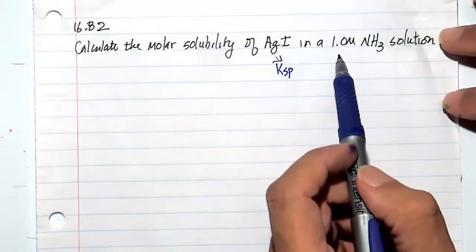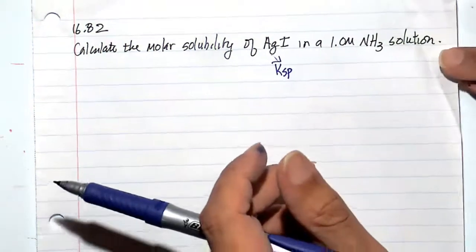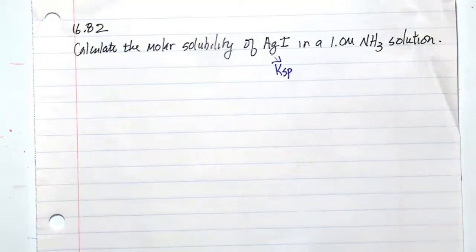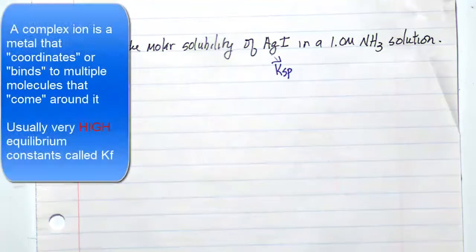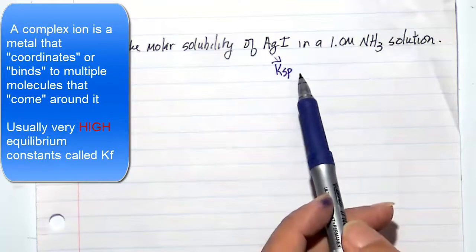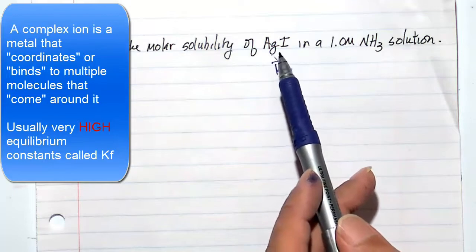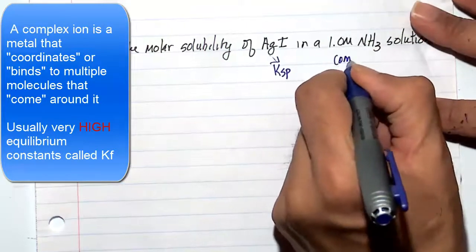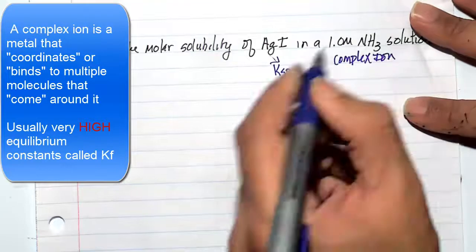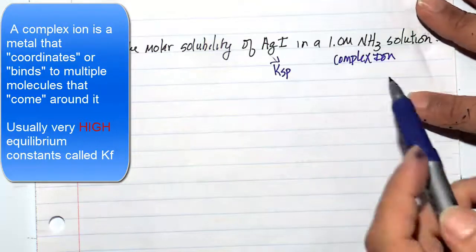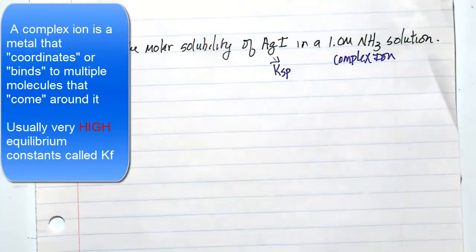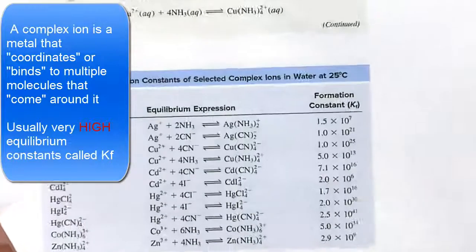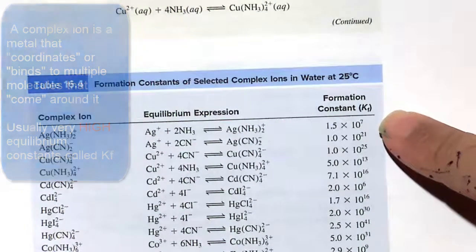So two equilibrium reactions. The complex ion formation has an equilibrium constant called Kf, known as a formation constant. Ag⁺ from silver iodide forms a complex with NH3. A complex ion is basically a metal ion that coordinates or binds a molecule. In this case, Ag⁺ will coordinate and bind two NH3 molecules forming a complex ion. These have equilibrium constants known as Kf, and they tend to be very, very large in magnitude. If you look at our table here, we can see some values of some complex ions.